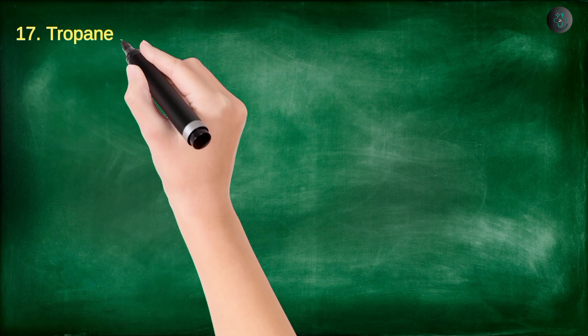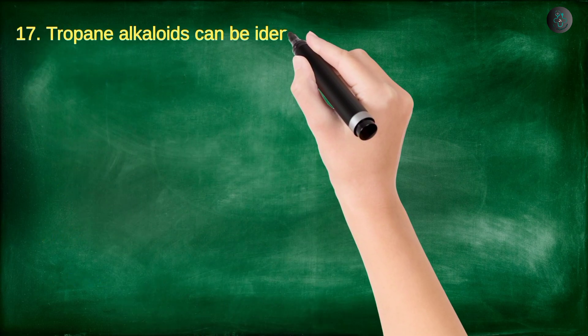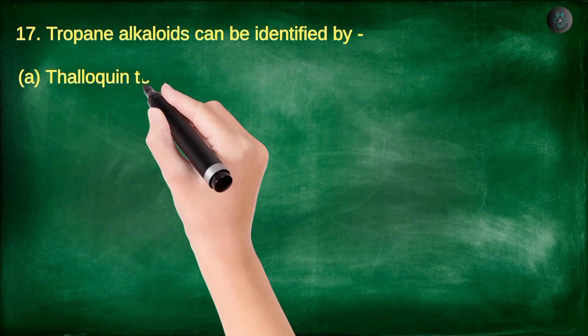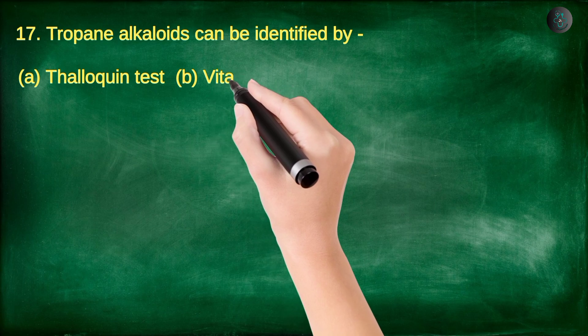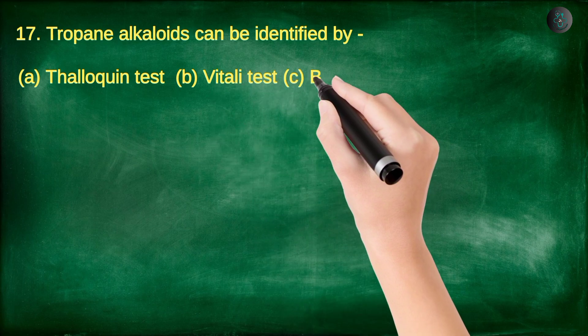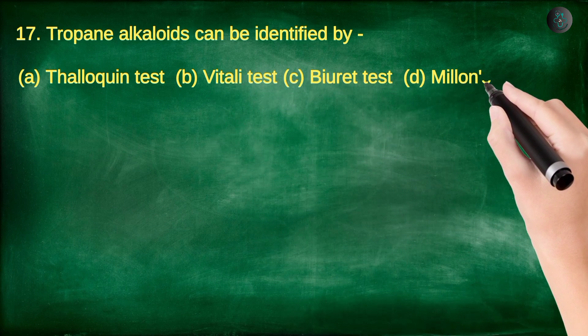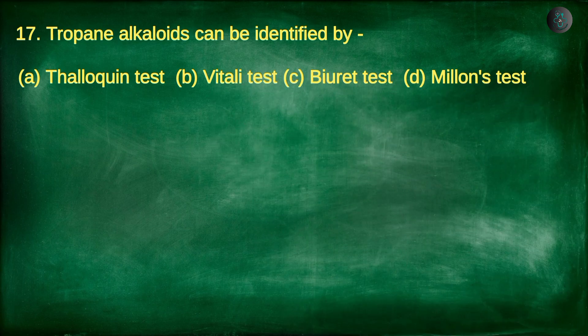Question number 17. Tropane alkaloids can be identified by: A. Thalleioquin test, B. Vitali test, C. Biuret test, D. Millon's test.